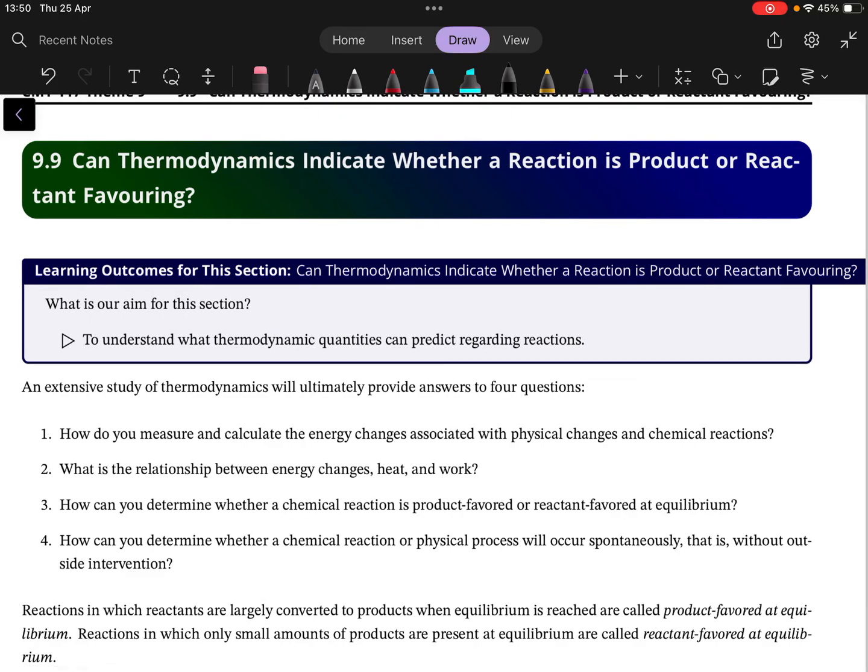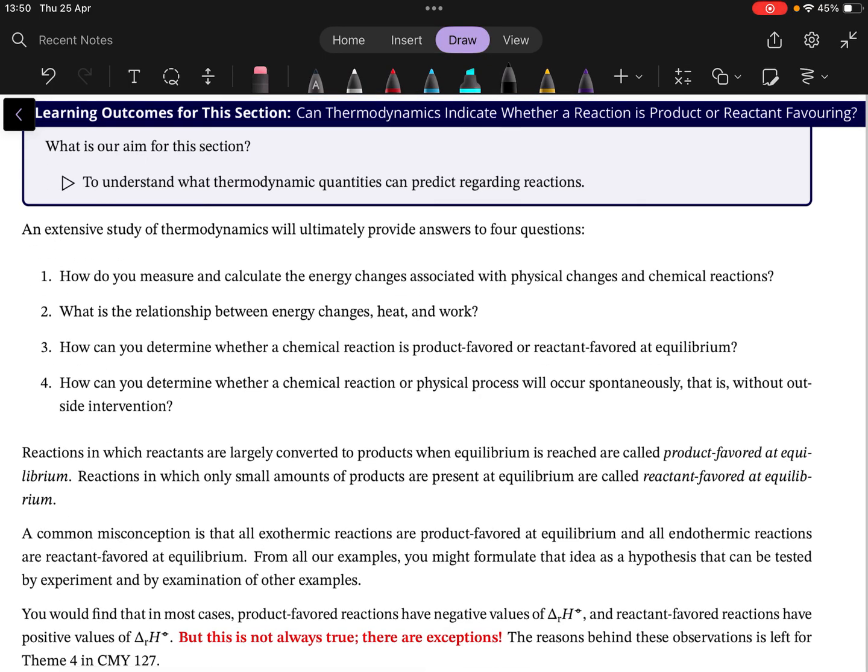So the final question is: can thermodynamics indicate whether a reaction is product or reactant favored? Now what does it mean for something to be product or reactant favored? Let's start with the conversation started there. So reactions that are called product favored have largely converted to products.